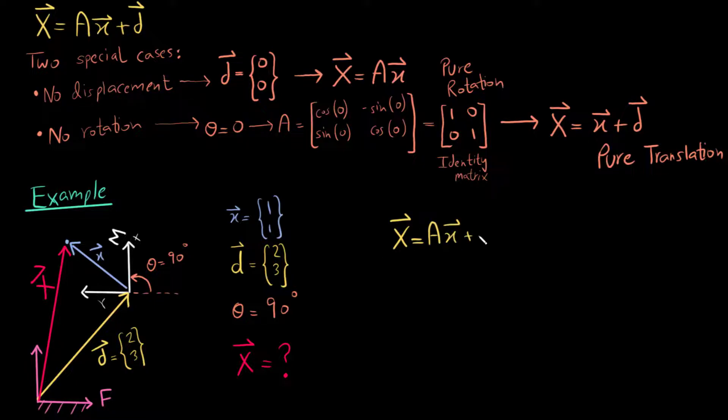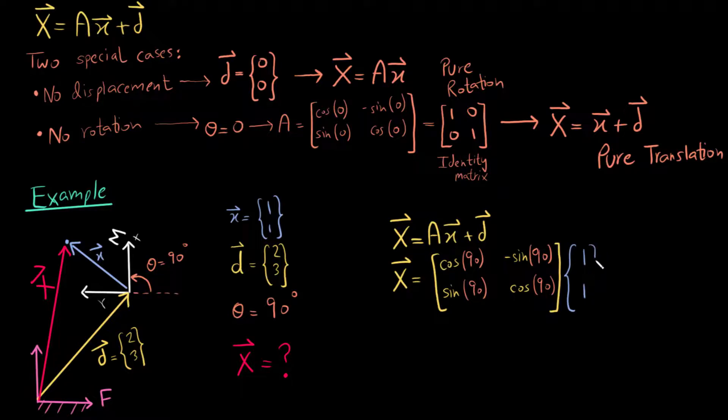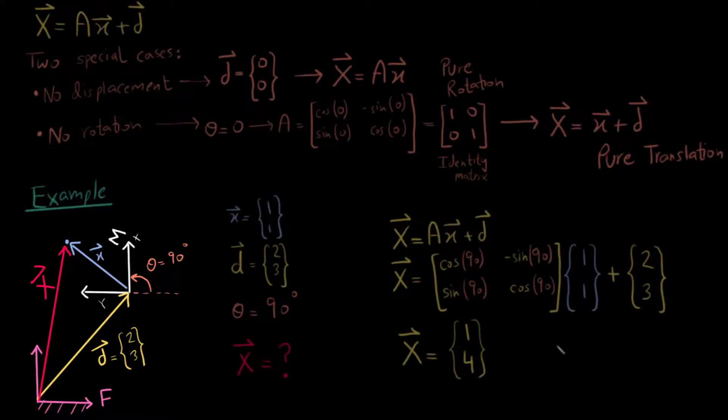By using the formula big X equals Ax plus d with theta as 90 degrees, small x as 1, 1 and the displacement vector as 2 and 3, I get 1 and 4. You can verify this by having a look at the diagram here or even by making an accurate sketch of this diagram if you wish to.